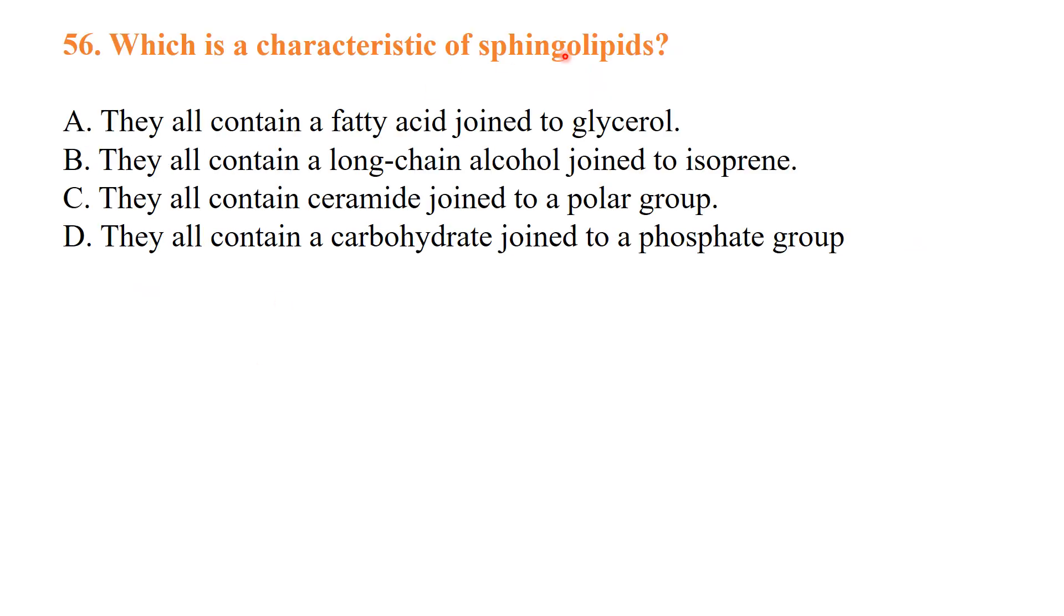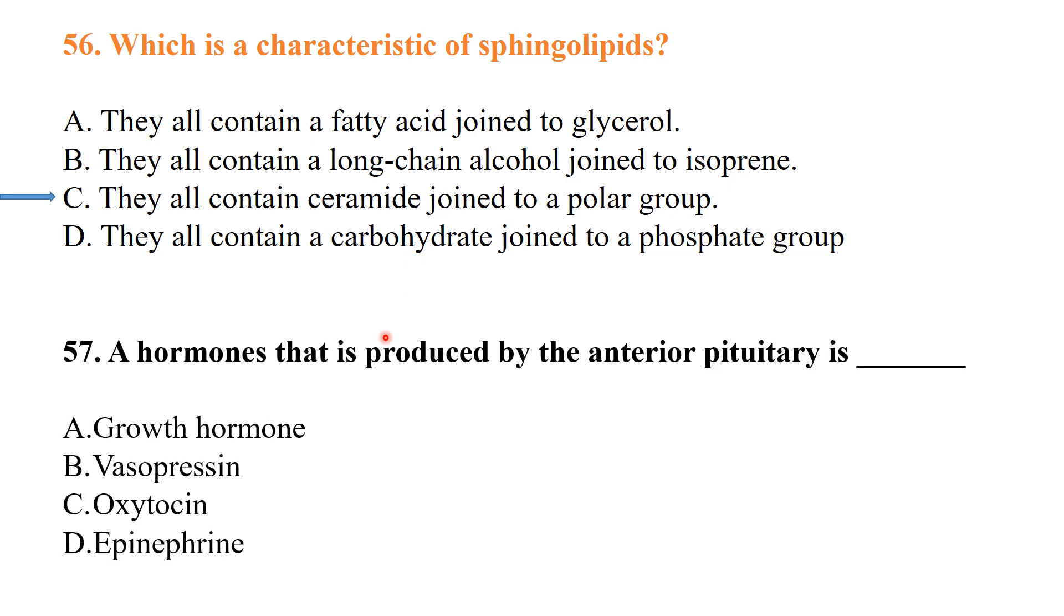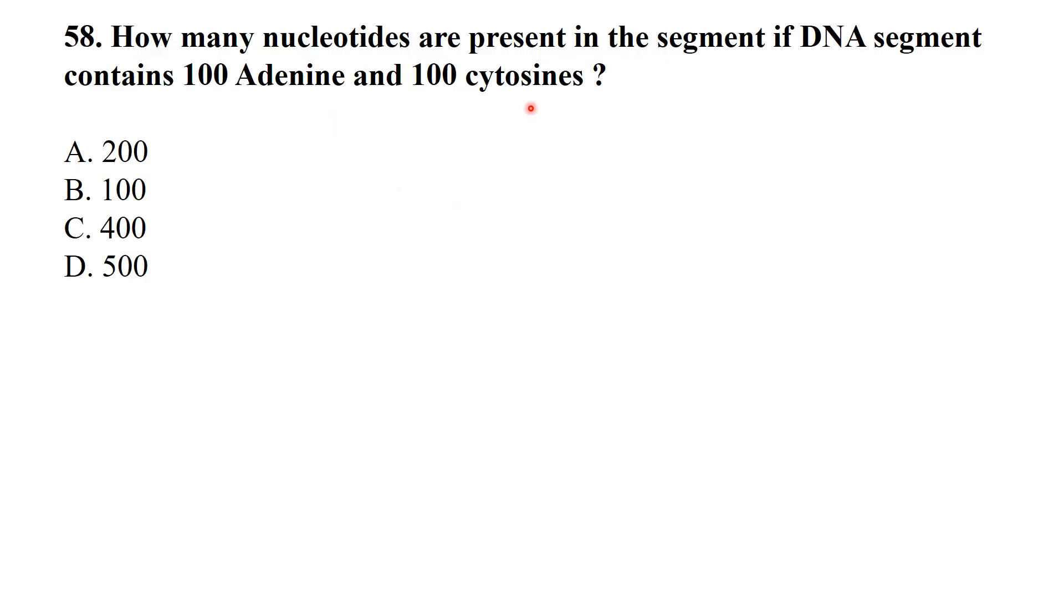Which is a characteristic of sphingolipids? Best answer is that they all contain ceramide. A hormone that is produced by the anterior pituitary - this is a very simple question. The growth hormone is mainly secreted by the anterior pituitary.